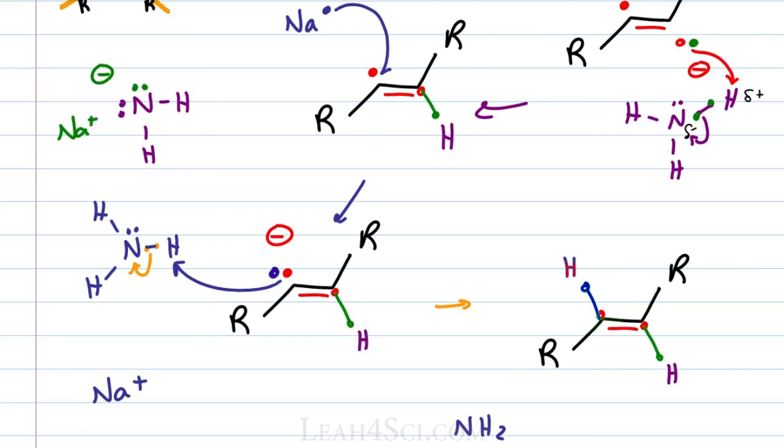The rest of the ammonia molecule is now NH2 minus floating around in solution able to pair up with the sodium that we created from that second radical step. But these are just spectators. What we care about is the fact that we formed a neutral trans alkene.